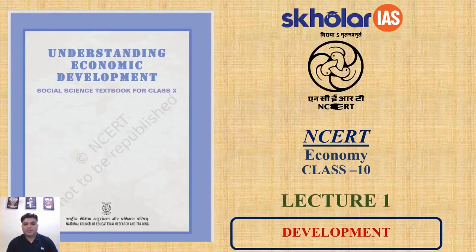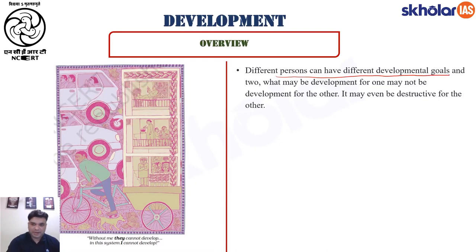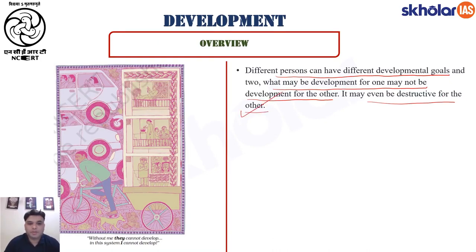This is the first lecture of class NCERT and we will be talking about development. Let's take an overview of the chapter. It says that different persons can have different developmental goals, and what may be development for one may not be development for the other. It may even be destructive for the other. Let me give you some examples to illustrate this.